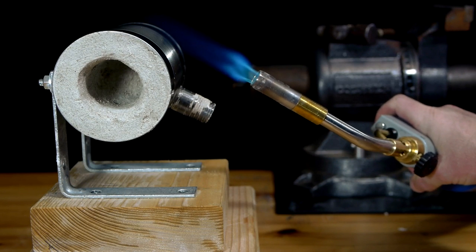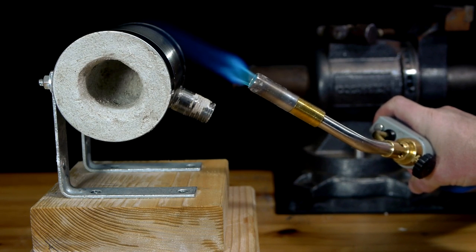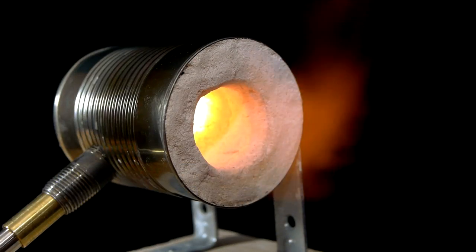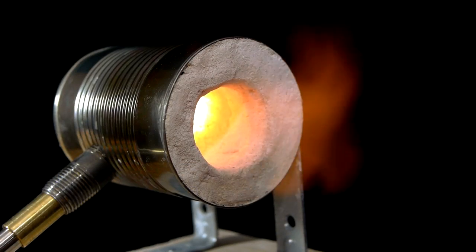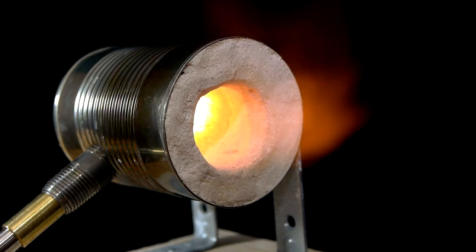If the air holes on the torch are near the tip, be sure that they are not covered. Because of carbon monoxide risks, this forge should only be used in a very well-ventilated area.